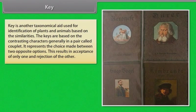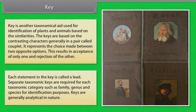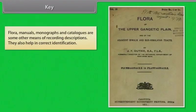A key is another taxonomical aid used for identification of plants and animals based on similarities. Keys are based on contrasting characters generally in pairs called couplets. It represents the choice made between two opposite options, resulting in acceptance of only one and rejection of the other. Each statement in the key is called a lead. Separate taxonomic keys are required for each taxonomic category such as family, genus and species. Flora, manuals, monographs and catalogues are some other means of recording descriptions that also help in correct identification.